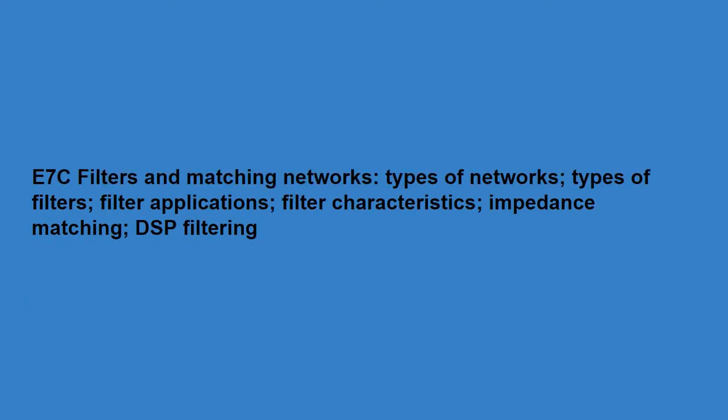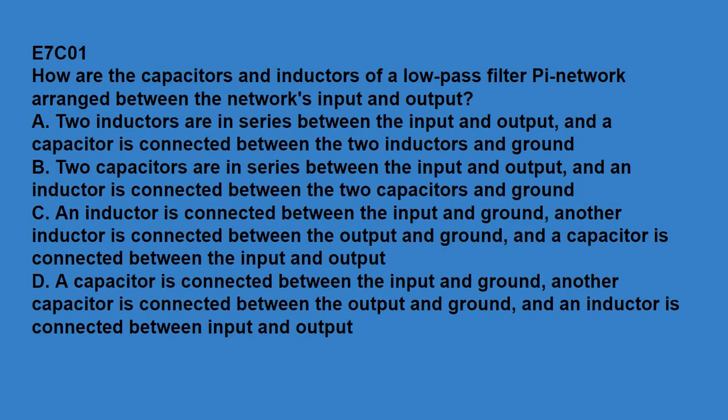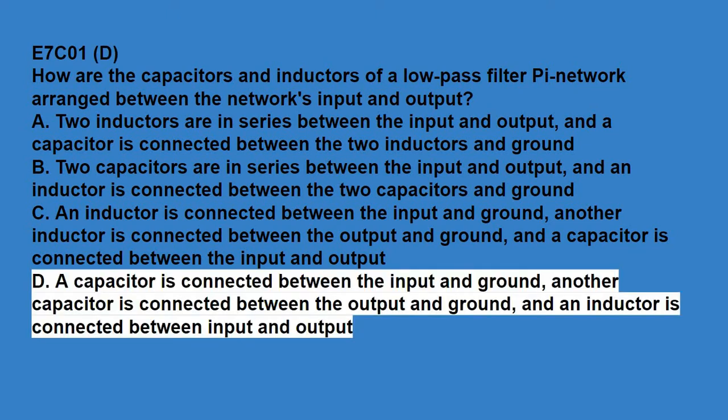E7C covers filters and matching networks, types of networks, types of filters, filter applications, filter characteristics, impedance matching, and DSP filtering. E7C01, how are the capacitors and inductors of a low-pass filter pi network arranged between the network's input and output? A capacitor is connected between the input and ground, an inductor is connected between the input and output, and another capacitor is connected between the output and ground.